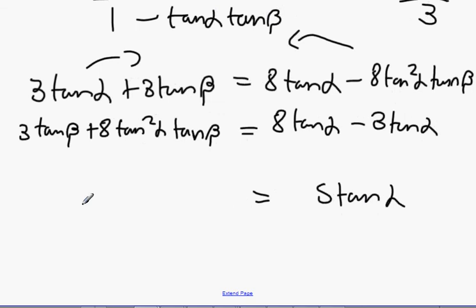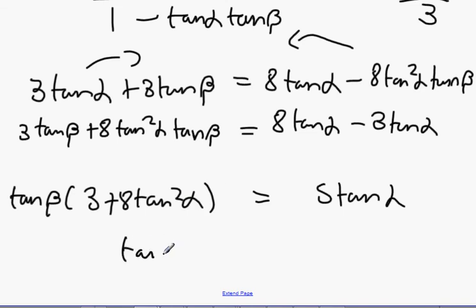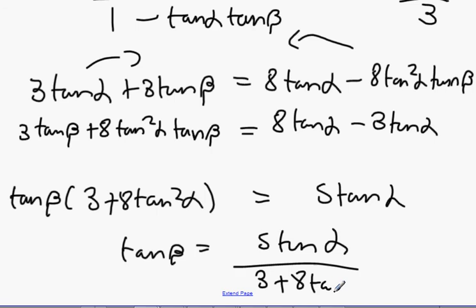And 5 tan alpha equals tan beta into 3 plus 8 tan squared alpha. Cross multiply down. Tan beta equals 5 tan alpha all divided by 3 plus 8 tan squared alpha, and you're done.